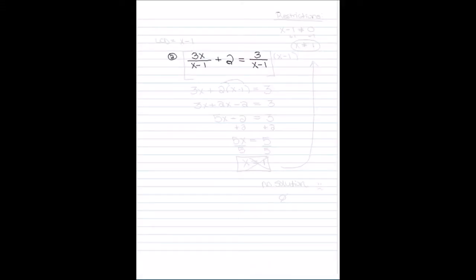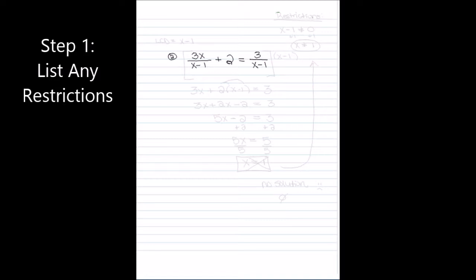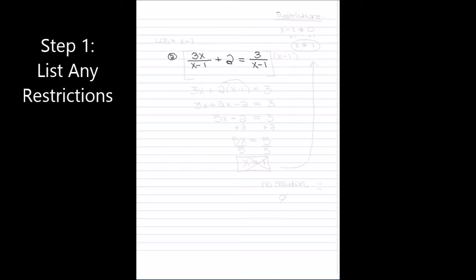So let's take a look. What you see is the first example, and this is a linear equation in one variable — all you see is x. The first step to solving a problem like this is to list any restrictions. Restrictions are values of x that you know you can't have in the equation. You have restrictions if there is a variable in the denominator or some type of square root.